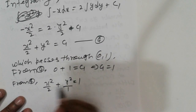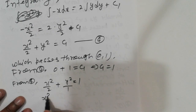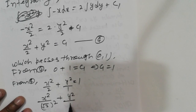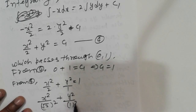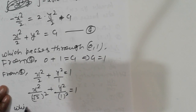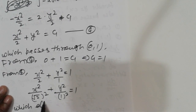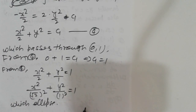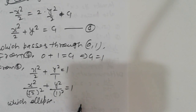The equation x²/2 + y² = 1 can be written as x² / (√2)² + y² / 1² = 1, which is an ellipse. So the orthogonal trajectory is an ellipse.